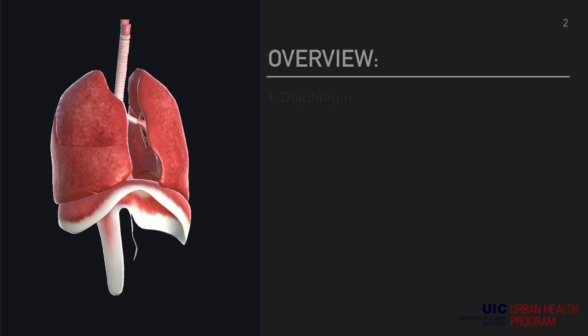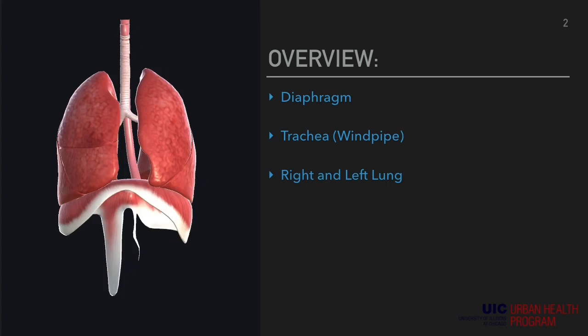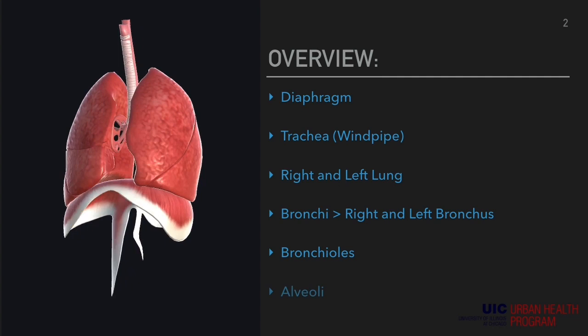We're going to start with the diaphragm, then the trachea, also known as the windpipe, then the right and left lung, onto the bronchi which divides into the right and left bronchus, and then making our way to bronchioles, and lastly alveoli.